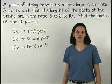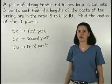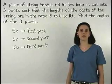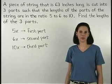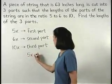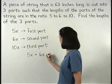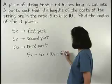Now since we know that the original piece of string was 63 inches long, our three parts must add to 63 inches. So we can set up the equation 5x plus 6x plus 10x equals 63.